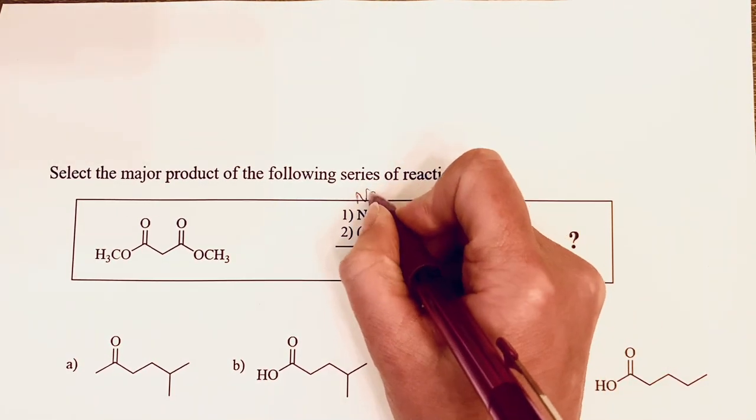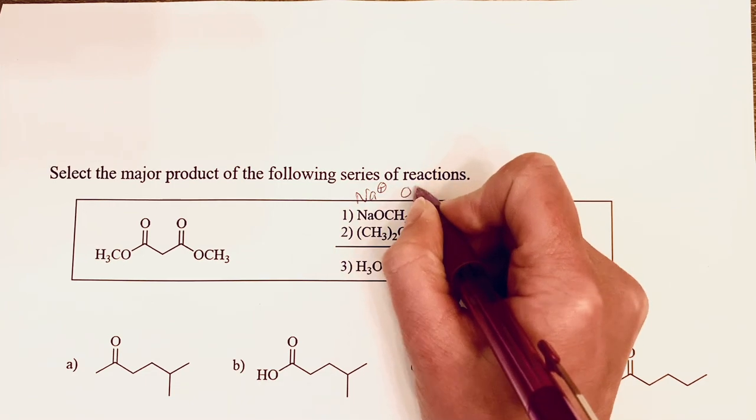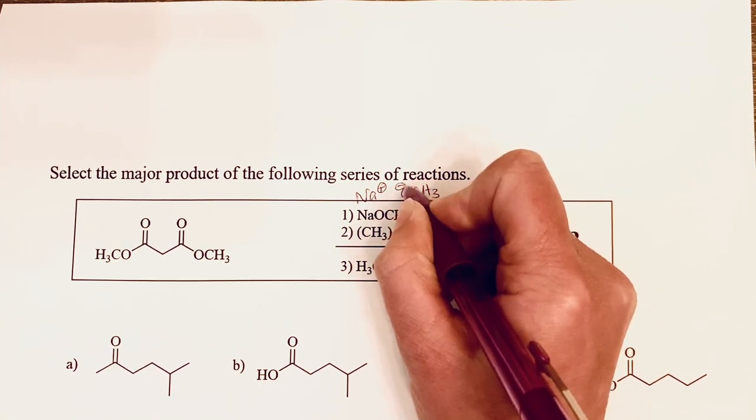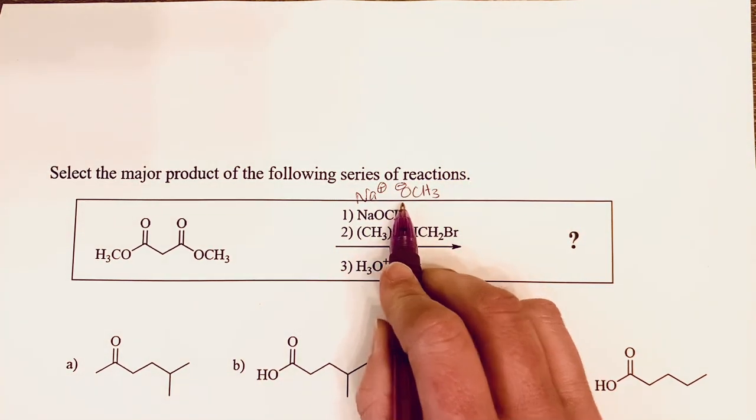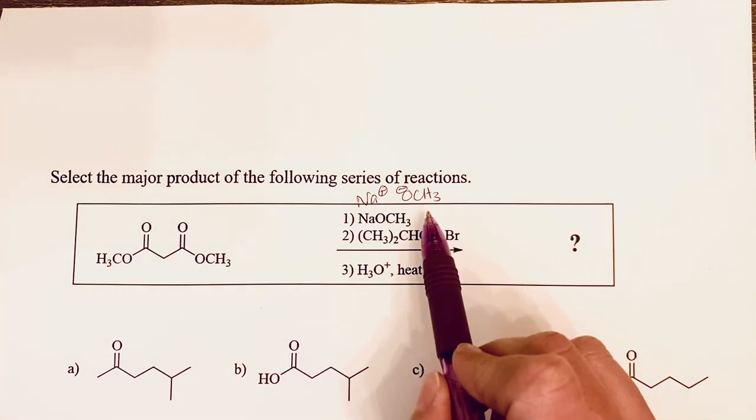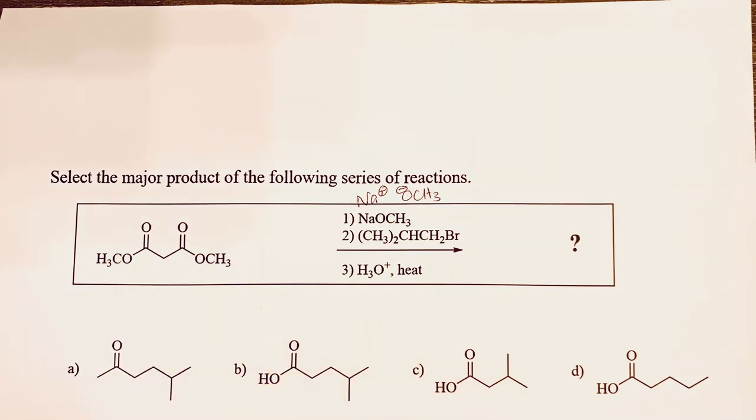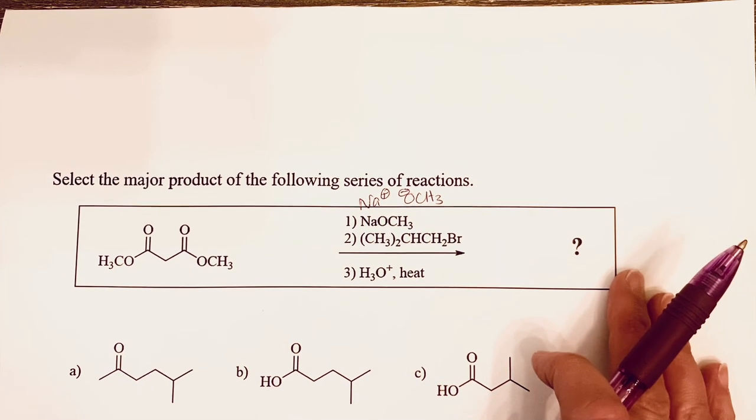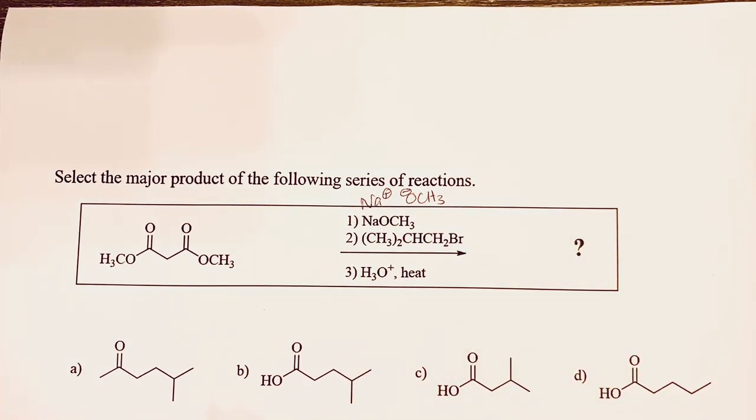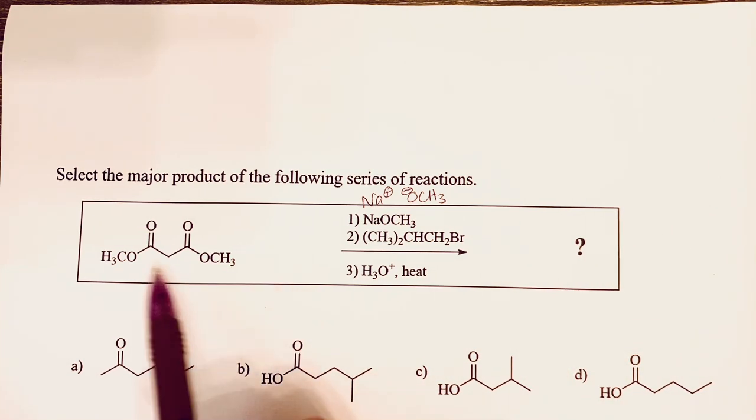First, recognize that this is sodium plus and methoxide with a negative charge on the oxygen, so this is a base. To figure out how this reaction starts, we want to look at this molecule and figure out where the most acidic hydrogen is. That's why we started this chapter looking for the most acidic hydrogens in molecules.